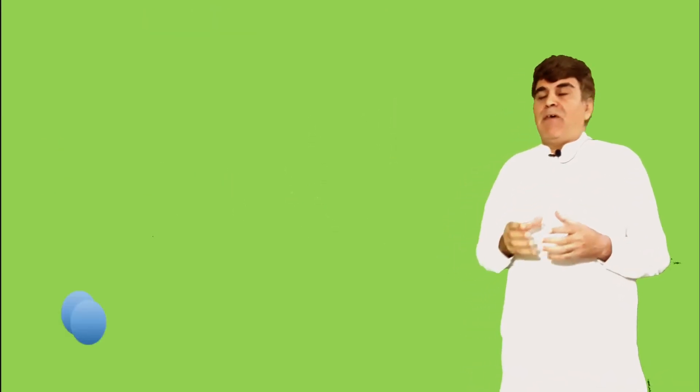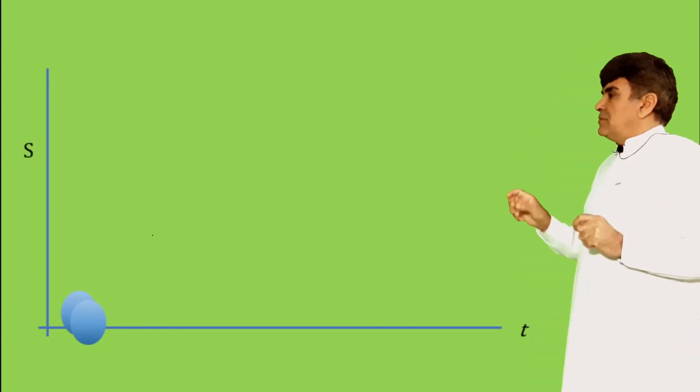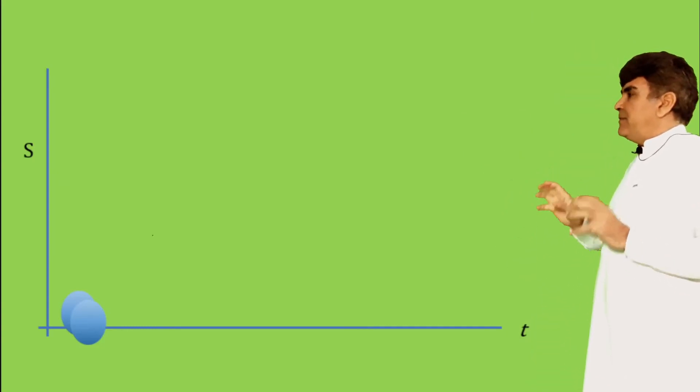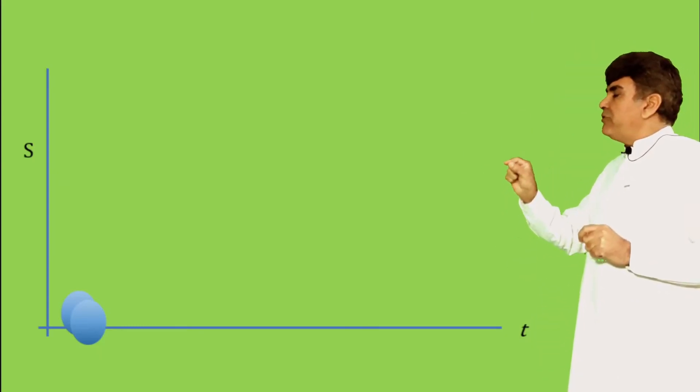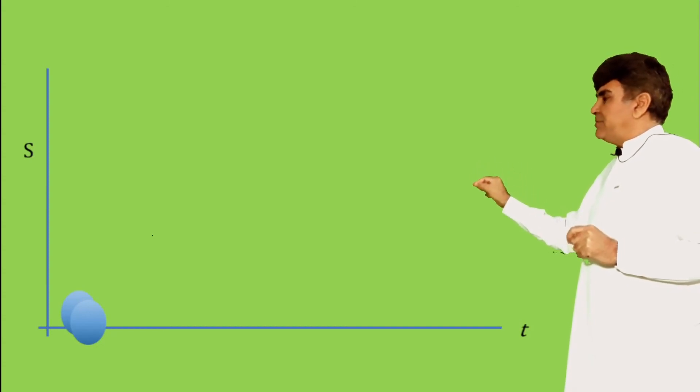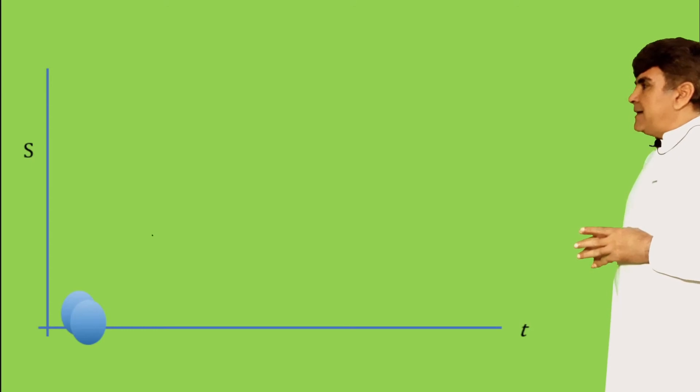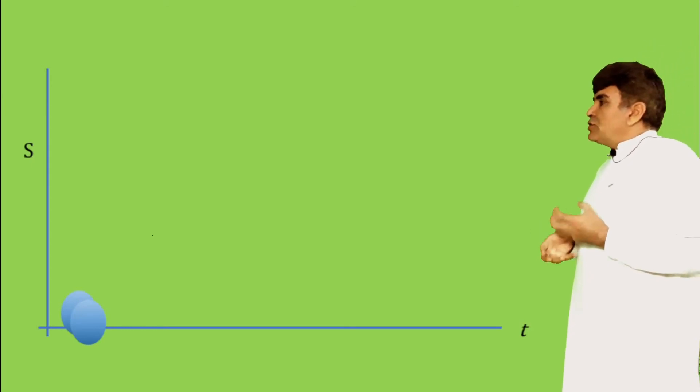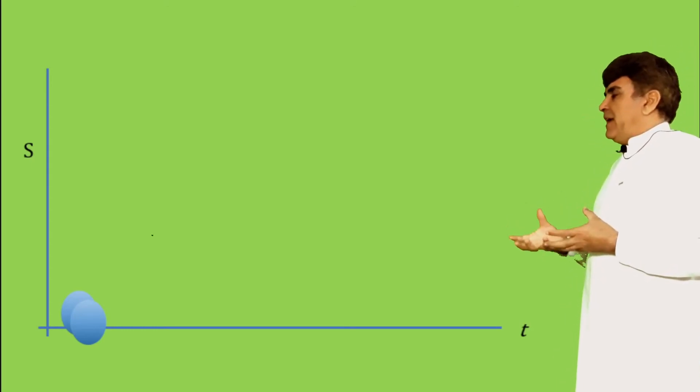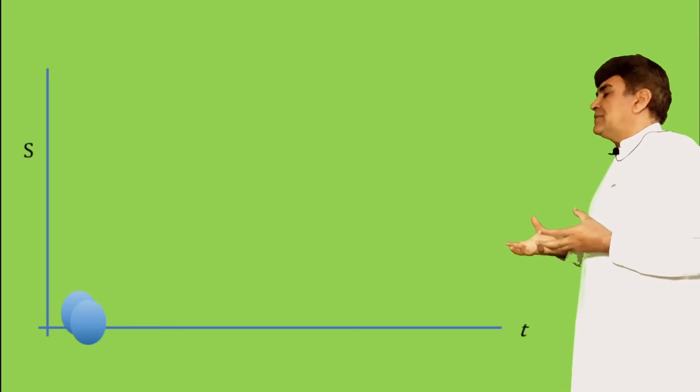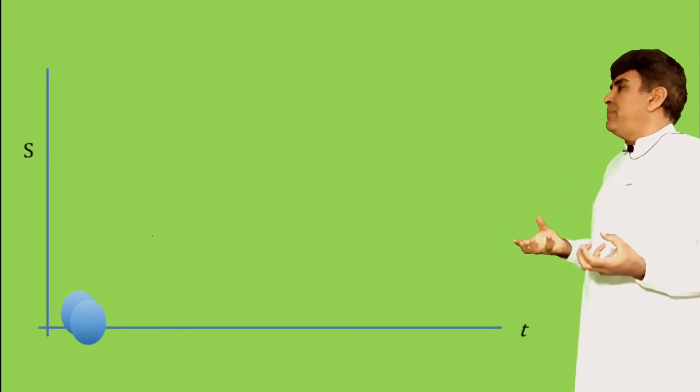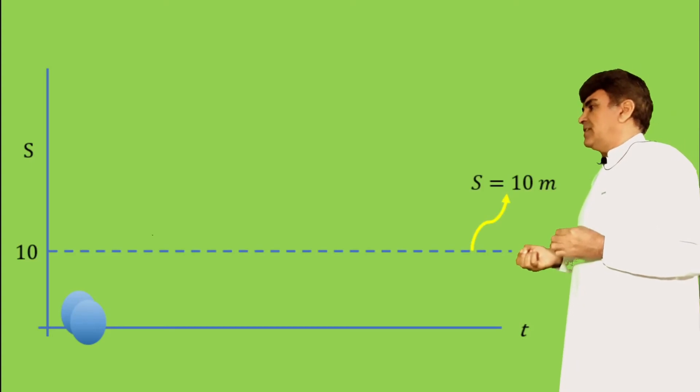Consider two identical spherical balls in the plane with horizontal represented by time and the vertical represented by distance. I throw these balls into the space with two velocities. One with 31.5 meters per second and the other with 18 meters per second.